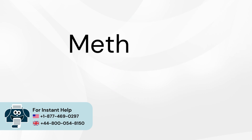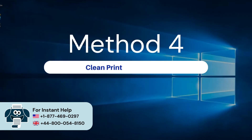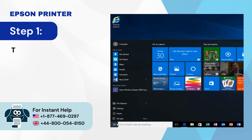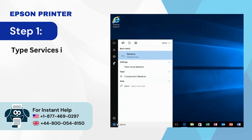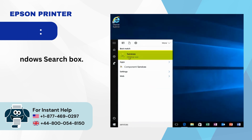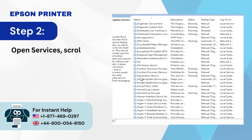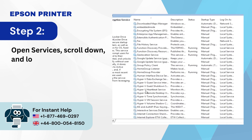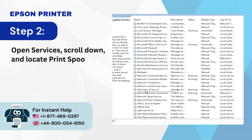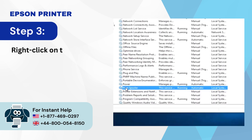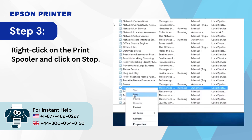Method 4: Clean print spooler files. Step 1: Type 'services' in the Windows search box. Step 2: Open Services, scroll down, and locate 'Print Spooler.' Step 3: Right-click on the Print Spooler and click 'Stop.'